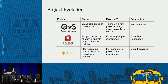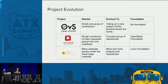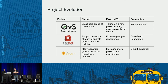Project evolution: OVS started with a small core group of contributors and has evolved to take on a new project — OVN — growing slowly but surely. Currently no foundation, though moving OVS to the Linux Foundation is being discussed. OpenStack is a rough consensus of many disparate groups into one code base, with a focused group of repositories, run by the OpenStack Foundation. OpenDaylight has many separate groups under the same large umbrella, autonomously moving around, with more and more projects added — run by the Linux Foundation.